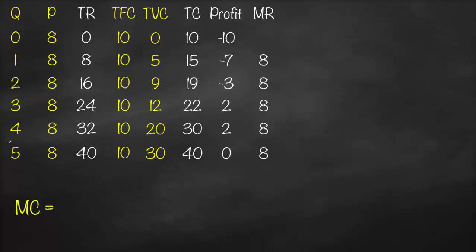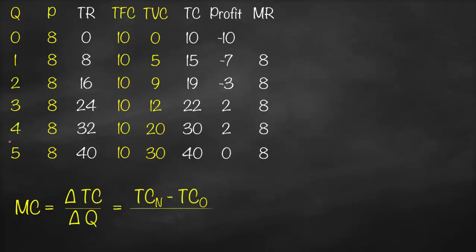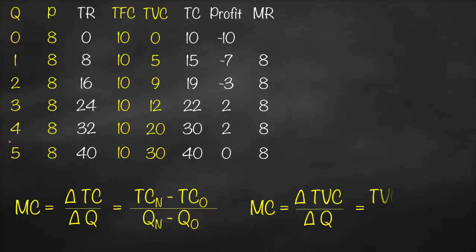Marginal cost is the additional cost if we produce one more unit: the change in total cost divided by the change in quantity — new total cost minus old total cost, divided by new quantity minus old quantity. Alternatively, marginal cost can be calculated from the change in total variable cost divided by the change in quantity.